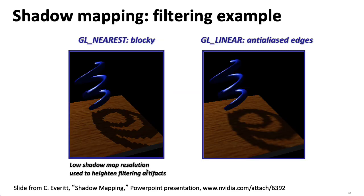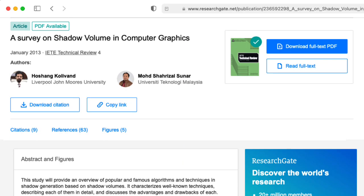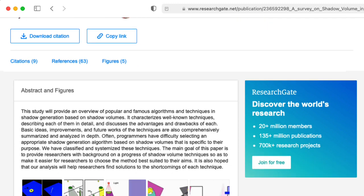Shadow maps can sometimes give your shadows a blocky appearance, especially for places where the shadow map is being projected a long distance from the light source. Here they've artificially cranked down the resolution of the shadow map to emphasize that effect. There are tricks you can do to try to smooth out these artifacts, though none of them are particularly principled from a mathematical viewpoint. Shadow volumes don't suffer from this and will give you pixel-perfect hard shadows, but in general shadow volumes seem to be more computationally intensive than shadow mapping techniques, so they've gone out of style.